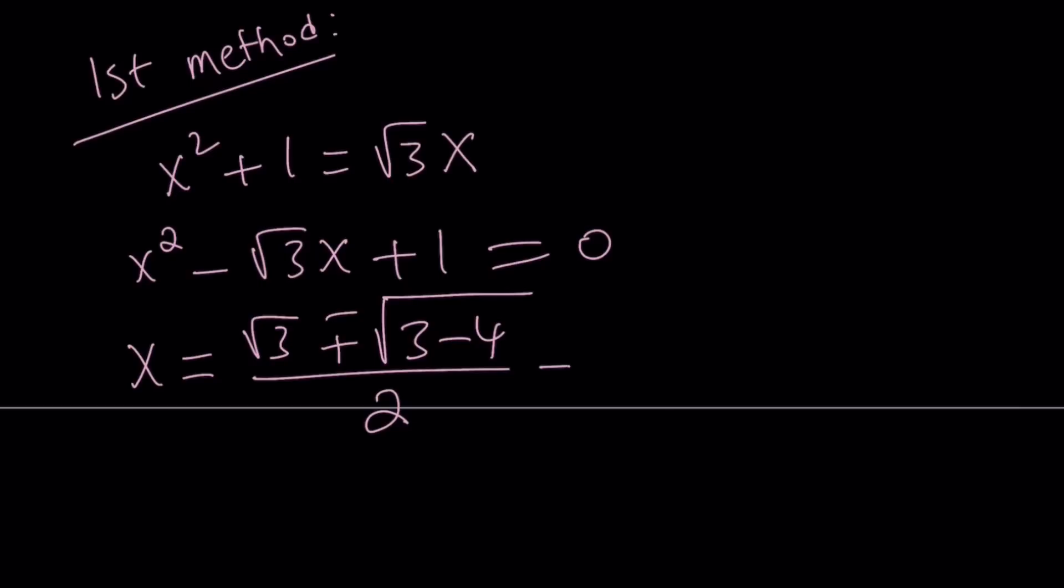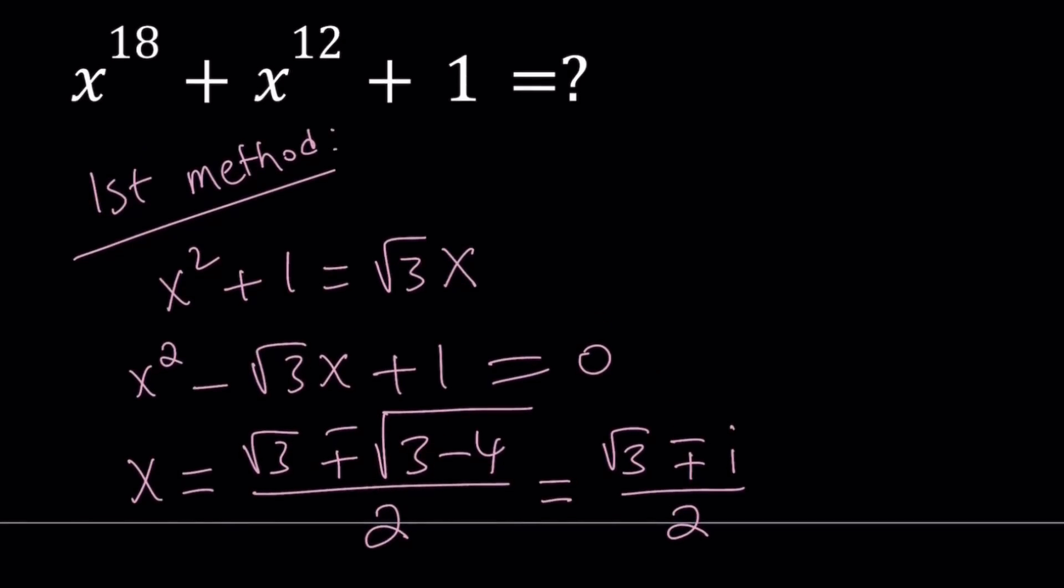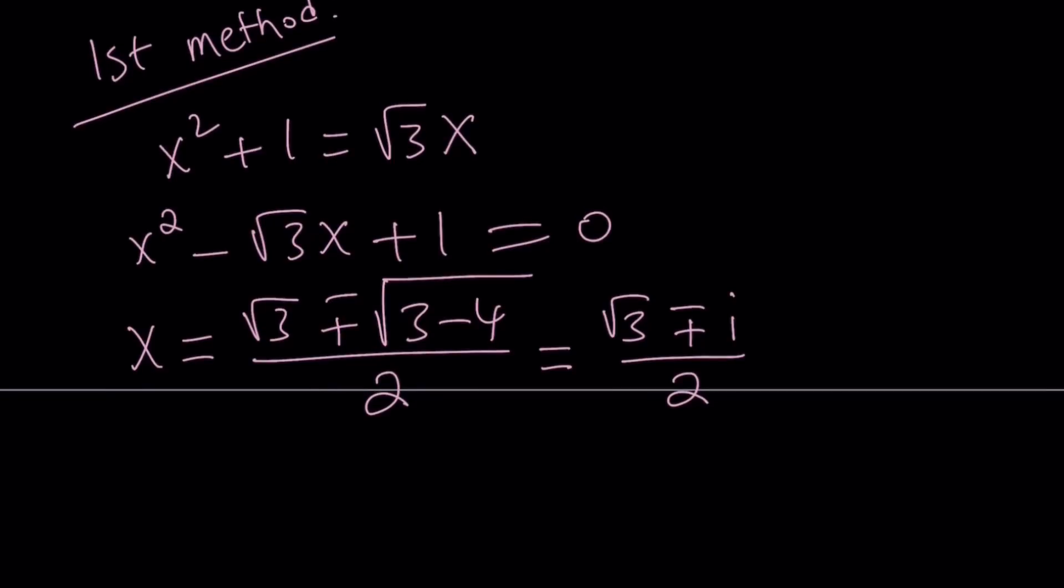So, complex number folks are going to like this, hopefully. Square root of 3 and square root of negative 1 is basically i. But since we have a plus minus sign, the plus minus sign is going to take care of the two different values. So, I can just write square root of 3 plus minus i divided by 2, and that is my x value. I didn't find the expression yet. I found the x value, but I can just go ahead and plug it in.